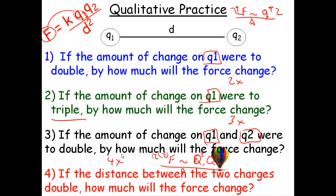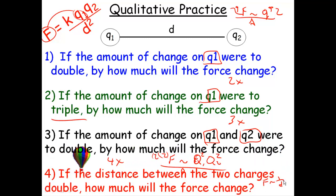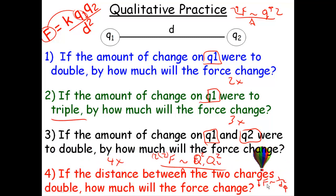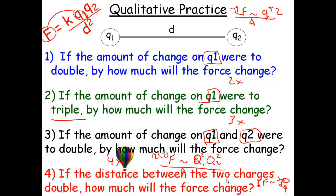And of course, distance. Tell me about the force when the distance between the charges doubles. The force is inversely related to the distance squared. If it was just the distance, you double it — as the denominator gets bigger, the force has to be smaller, so you'd say it's going to be a half. But it's squared. So this would be, of course, one-fourth as much force.